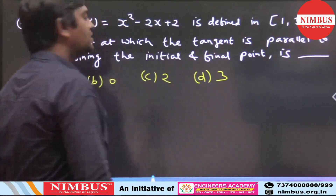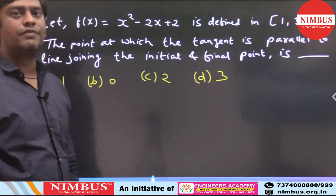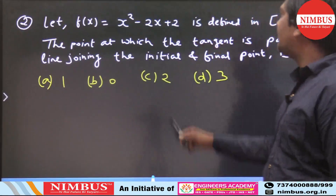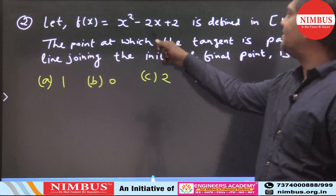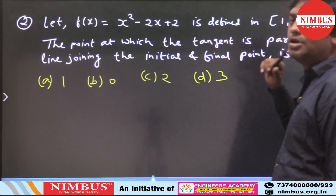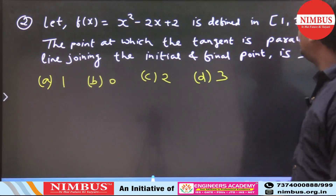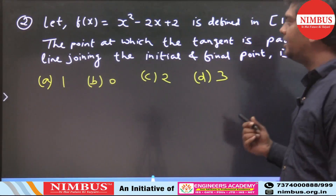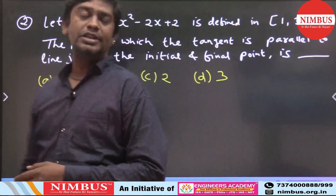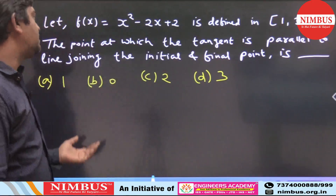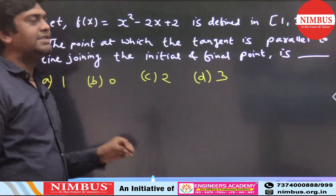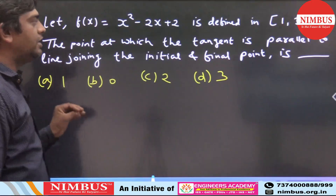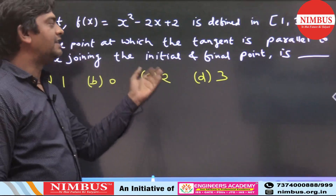Question number 2. Again this is a question from differential calculus only. The point at which the tangent is parallel to the line joining the initial and final point.